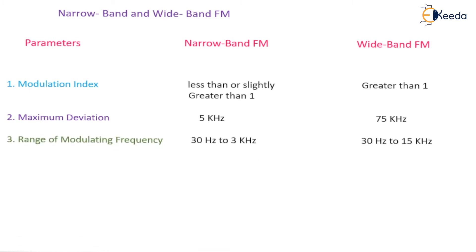The third parameter is the range of modulating frequency used. For Narrowband FM, it is 30 hertz to 3 kilohertz, and for Wideband FM the range is larger — 30 hertz to 15 kilohertz. This is the main reason Wideband FM is used for speech transmission in television signals, with a maximum modulating frequency of 15 kilohertz.